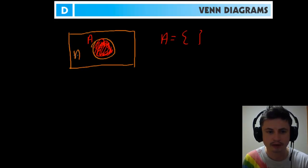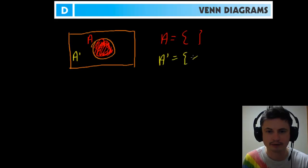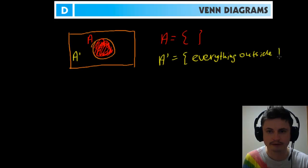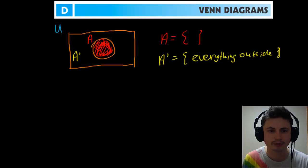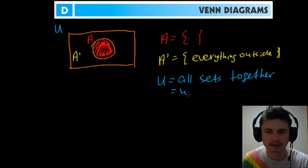The rest of the stuff that is outside the circle is what we call — I'm going to use yellow color for this — A prime, or basically 'not A.' So not A is everything outside of the circle. And don't forget that the actual square rectangle also has a name: this is also a set, and we call it U.